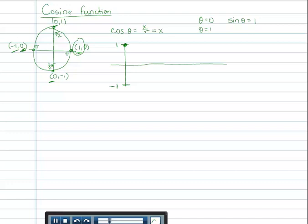So when theta is zero, sine theta is one. When theta is pi halves... why am I talking about cosine? Cosine theta is, so at pi halves, the x value is zero. So at pi halves, the function is going to go through the x axis.